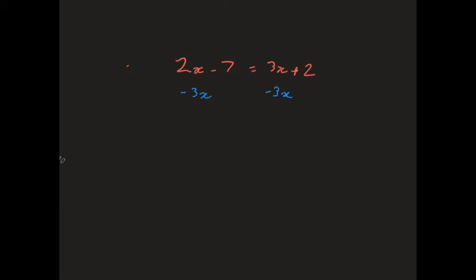Okay, we must do the same thing on both sides. Let's subtract 3x from both sides. If we subtract 3x from both sides, we end up with the variable only on the left-hand side. So, 2x minus 3x is minus x. I've got the minus 7. The right-hand side equals 2.